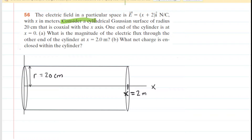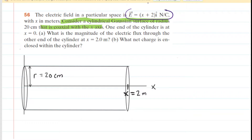We are asked to consider a cylindrical Gaussian surface with a particular radius that is coaxial with the x-axis. We have drawn a Gaussian surface in the shape of a cylinder, it is coaxial with the x-axis, and there is an electric field in this region of space given by this equation. The electric field depends on x, making it a non-uniform, variable field.